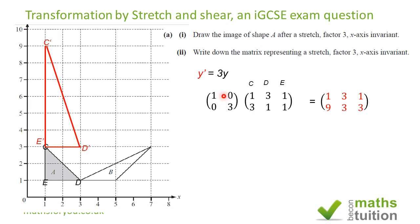Let's check: 1×1 + 0×3 = 1, so the x-coordinate of C' is 1. For the y-coordinate: 0×1 + 3×3 = 9. And so on for the other points. These are the new coordinates for triangle C'D'E', confirming the transformation matrix is correct.